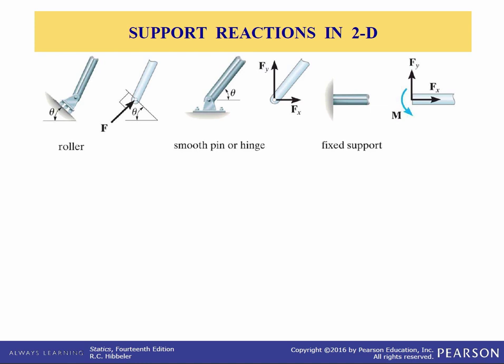For example let us consider three ways in which a horizontal member such as a beam is supported at its end. One method consists of a roller or a cylinder. Since this support only prevents the beam from translating in this direction the roller will only exert a force on the beam in that same direction.